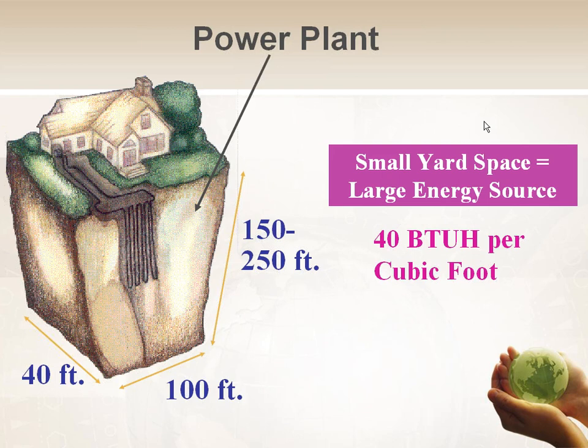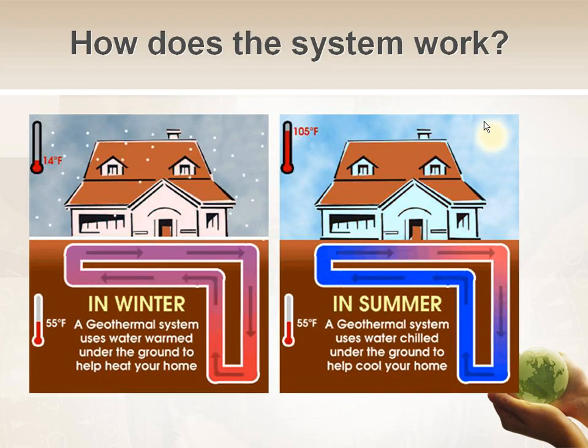Talking about consumer awareness — this is one of the nicest slides I've used to explain to consumers what's available. The ground under their home, whether it's a small piece of property, can actually provide enough energy to heat and cool their entire home. 40 BTUs per cubic foot, so we don't need a lot of energy to provide heating and cooling.